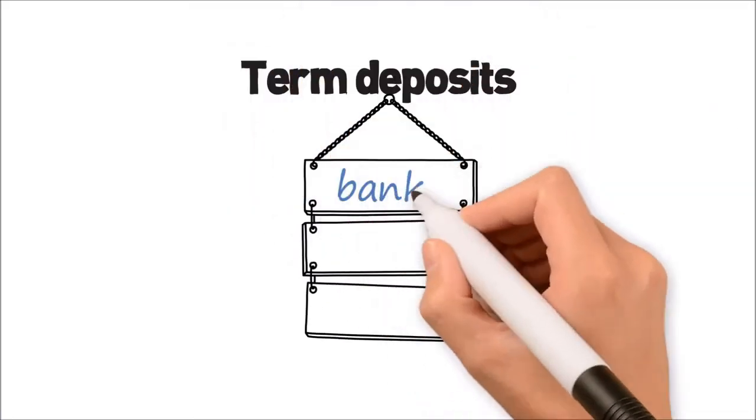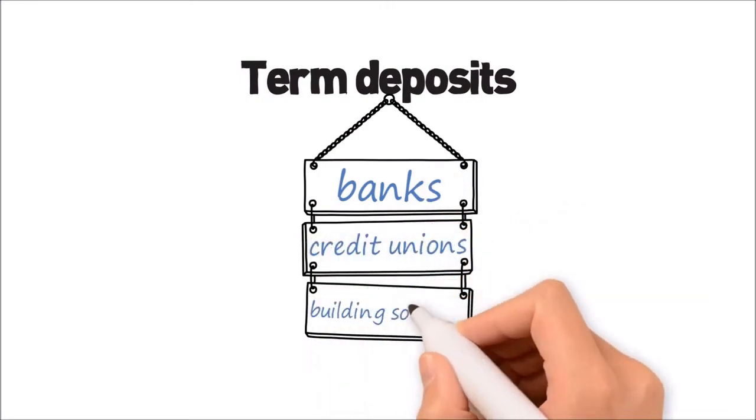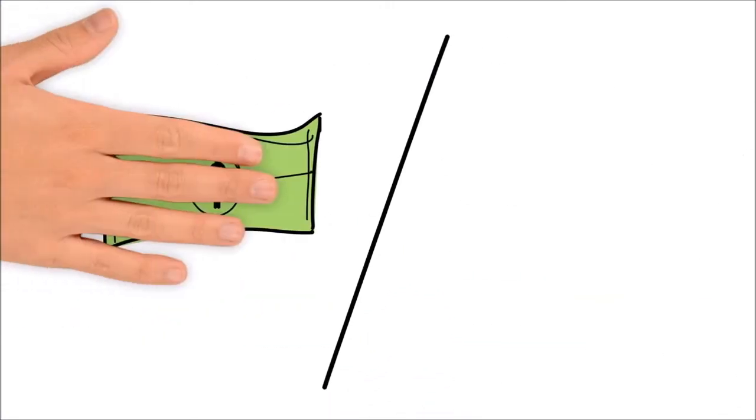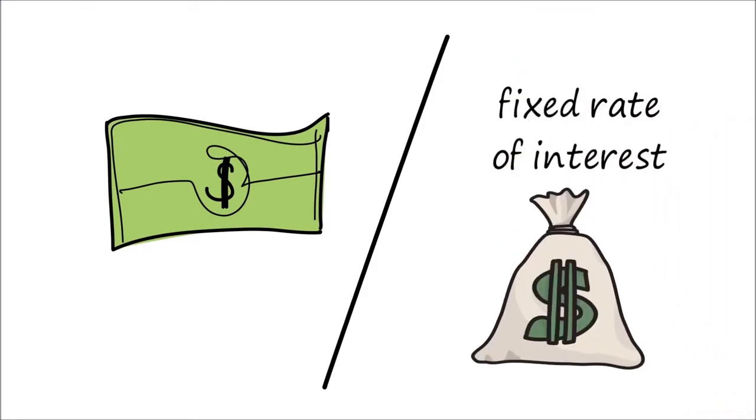Term deposits are saving products offered by banks, credit unions and building societies. You give them a chunk of money for an agreed term and they give you a fixed rate of interest over that term.